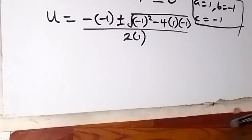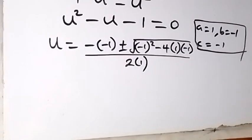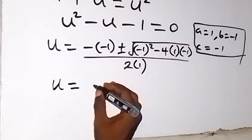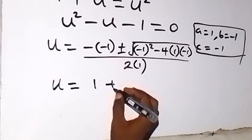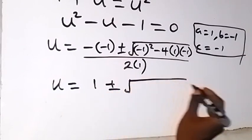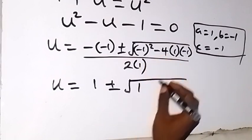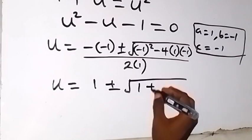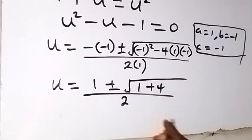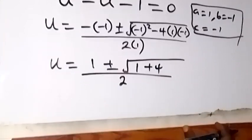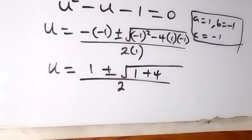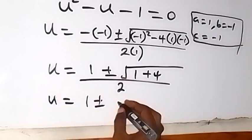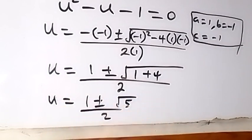When we solve this equation, we have u equals: minus times minus is plus, so that's 1 plus or minus square root of — minus 1 squared is 1, then minus minus 1 is plus 4 — over 2 times 1, that's 2. So u equals 1 plus or minus square root of 5, all over 2.